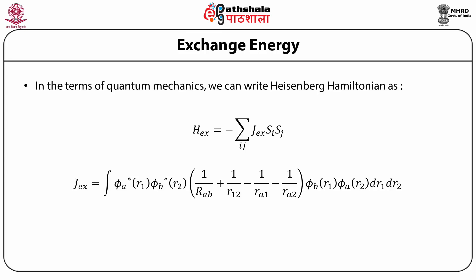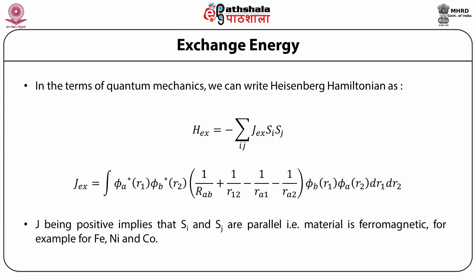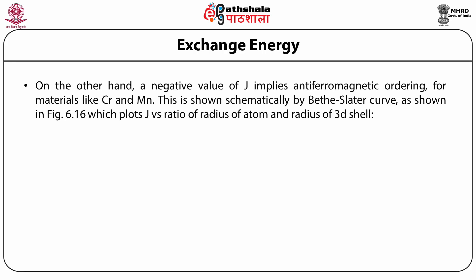In terms of quantum mechanics, we can write the Heisenberg Hamiltonian as H-exchange equals minus summation over ij of J-exchange times Si dot Sj, where J-exchange is the exchange integral. A positive J implies Si and Sj are parallel, meaning the material is ferromagnetic — as seen for iron, nickel, and cobalt. A negative value of J implies antiferromagnetic ordering, as seen for chromium and manganese.